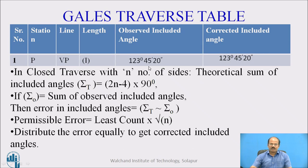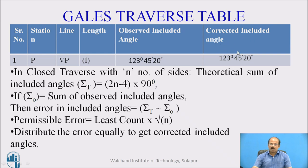As has been shown in the table, we start with a serial number, followed by the station name, name of the lines, and the length of each side of the traverse. Observed included angles are recorded at that particular station — for example, station P is shown with an included angle of 123 degrees 45 minutes 20 seconds. It is followed by the corrected included angle.